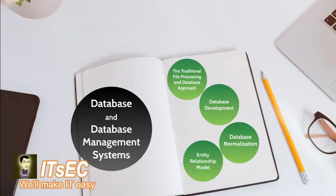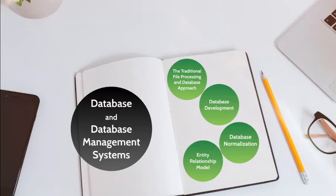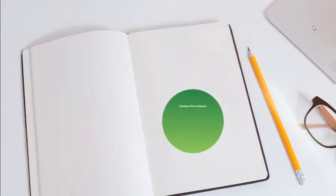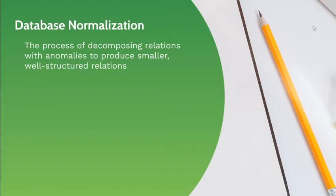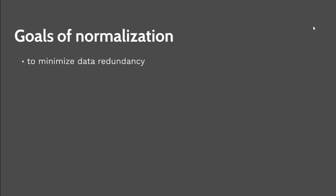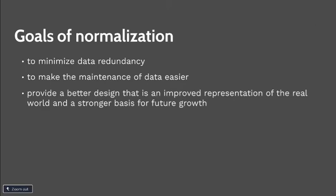Database Normalization is the process of decomposing relations with anomalies to produce smaller, well-structured relations. The goals of normalization are: to minimize data redundancy, thereby avoiding anomalies and conserving storage space, to make the maintenance of data easier, and to provide better design — an improved representation of the real world and a stronger basis for future growth.